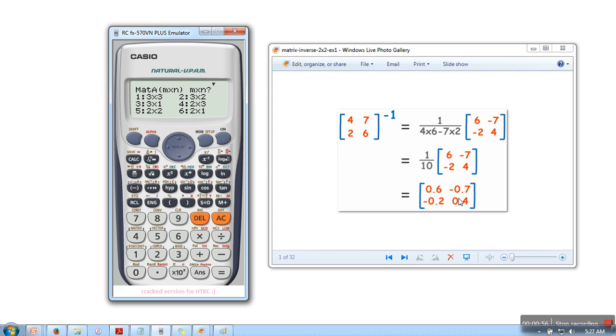So here we need to select a 2 by 2 matrix which is at 5, so we need to press 5. So here we will enter this matrix: 4, 7, 2, 6.